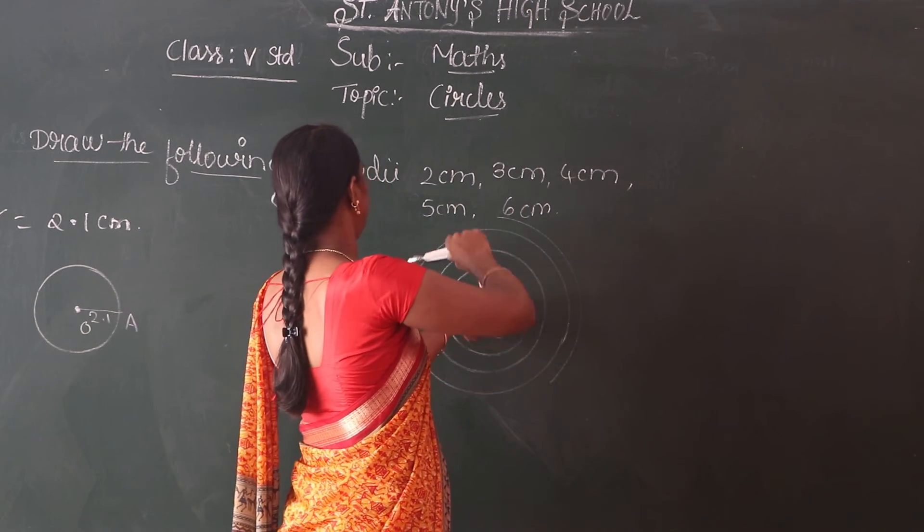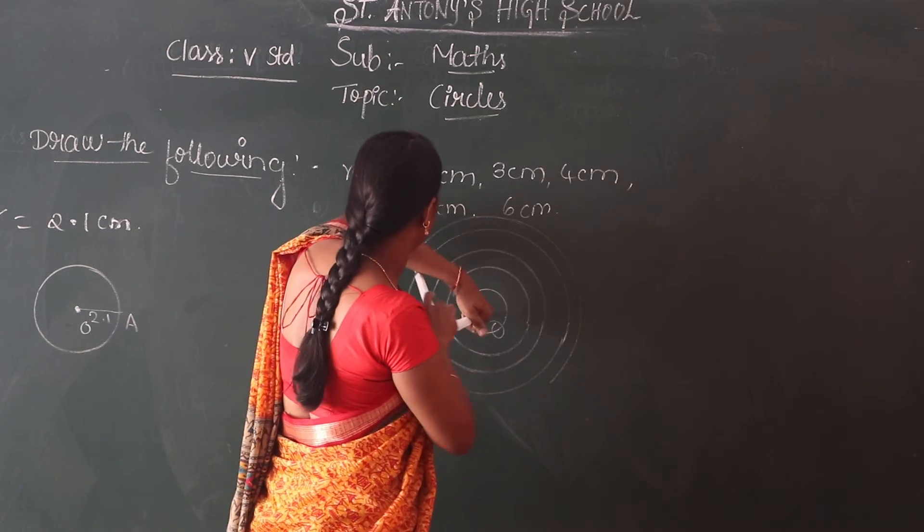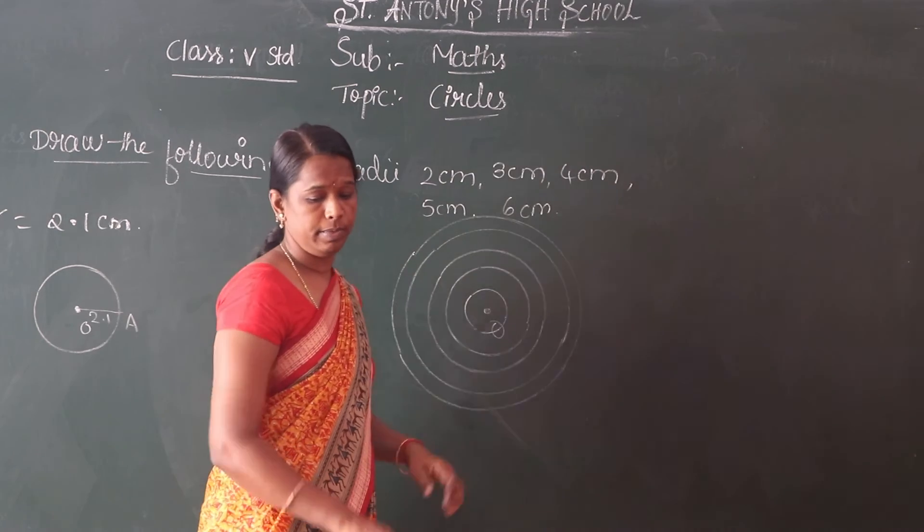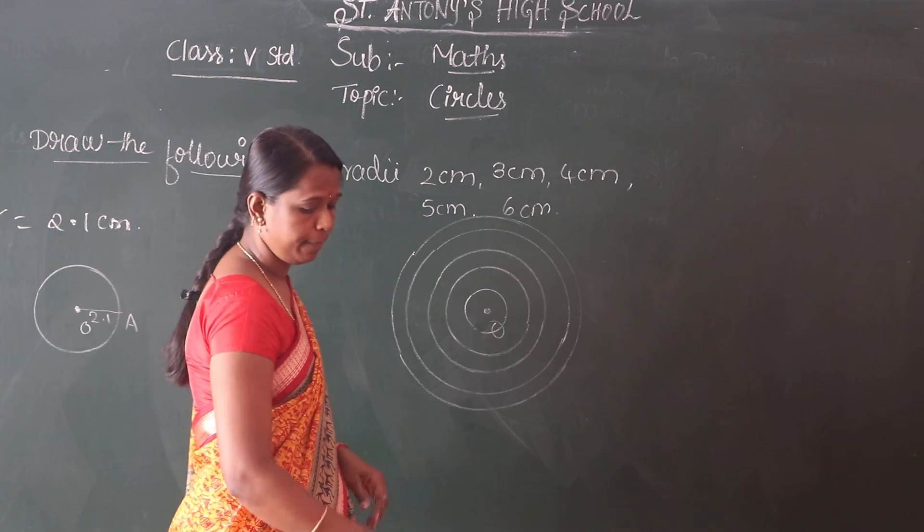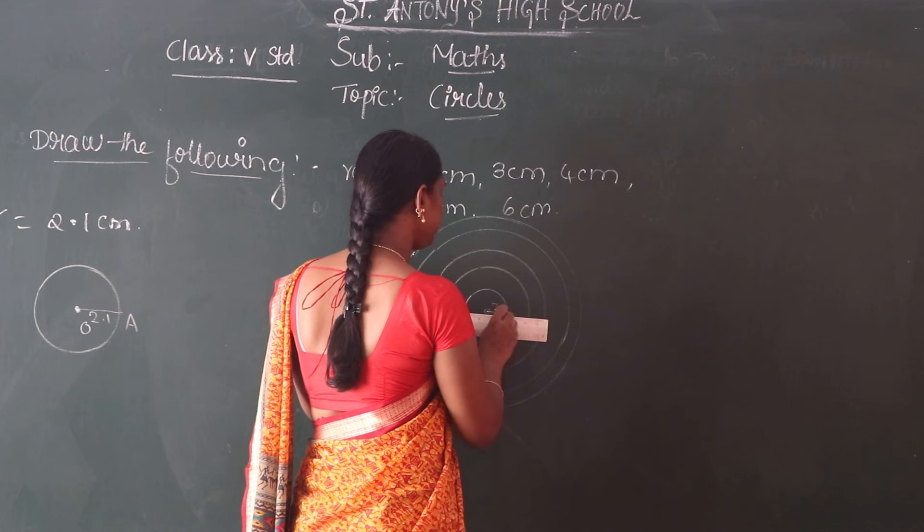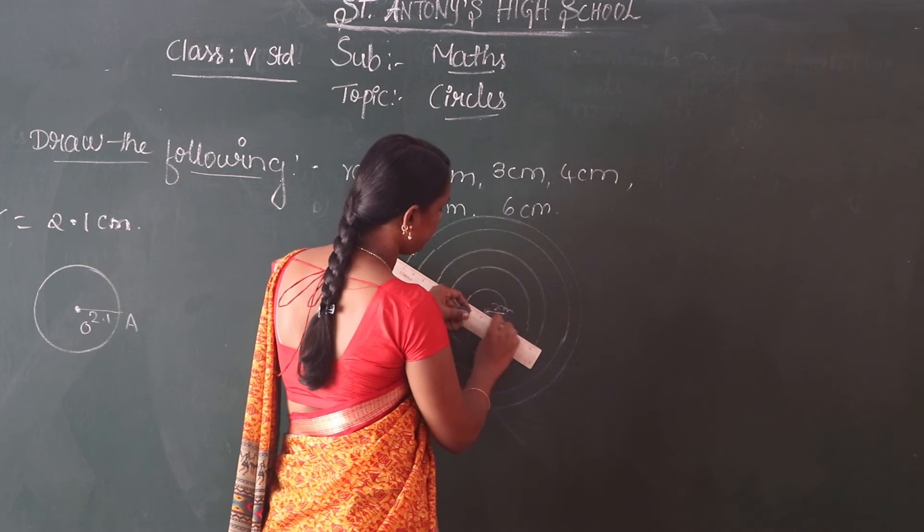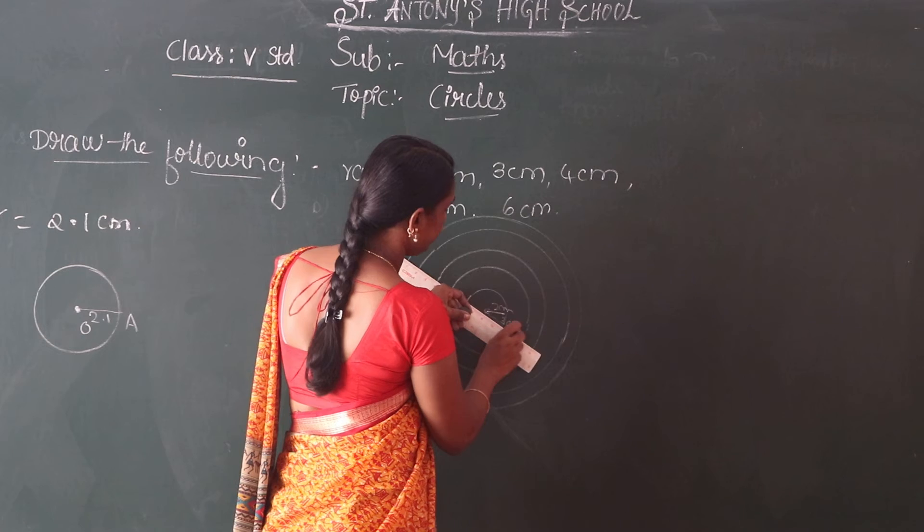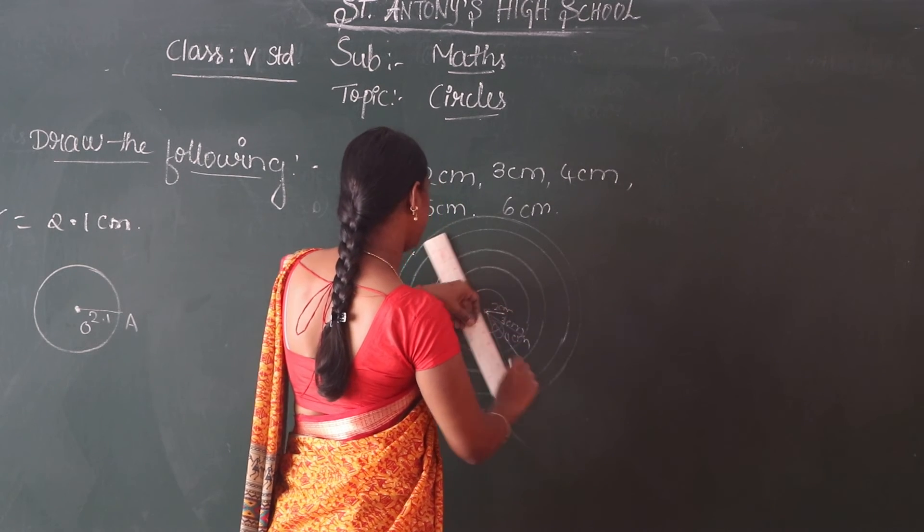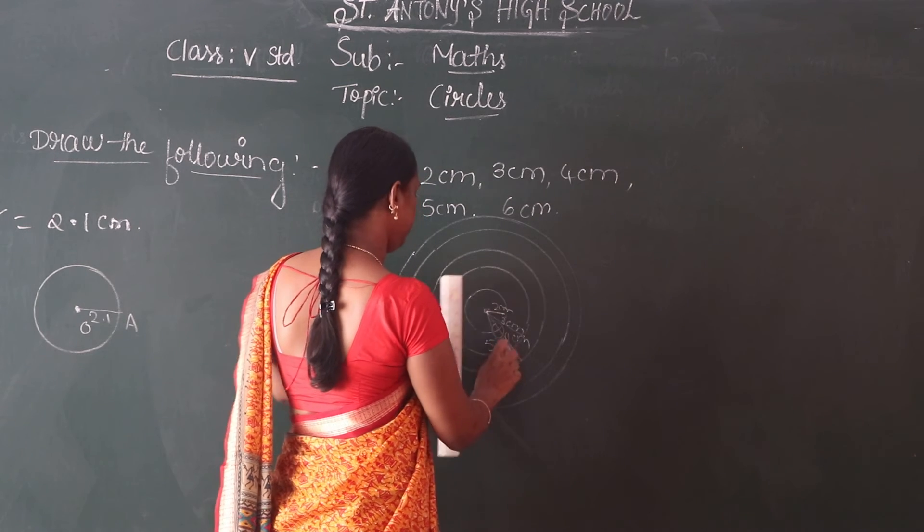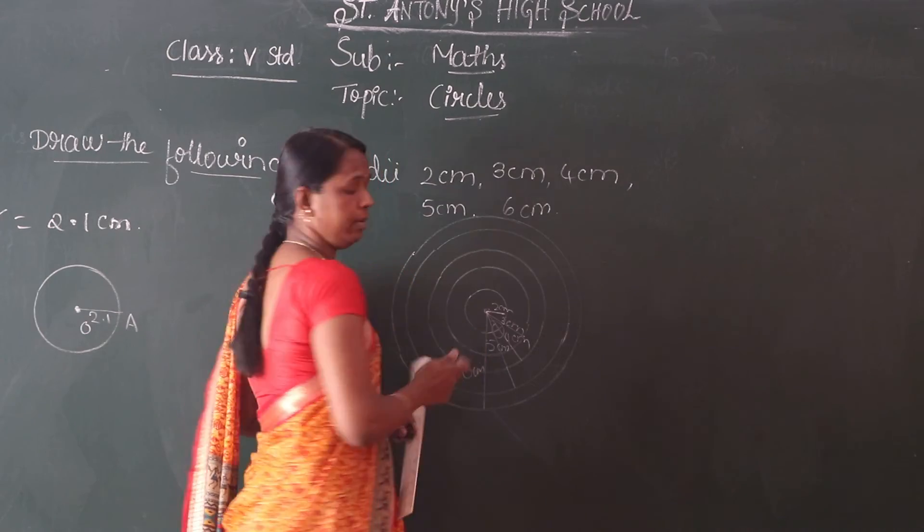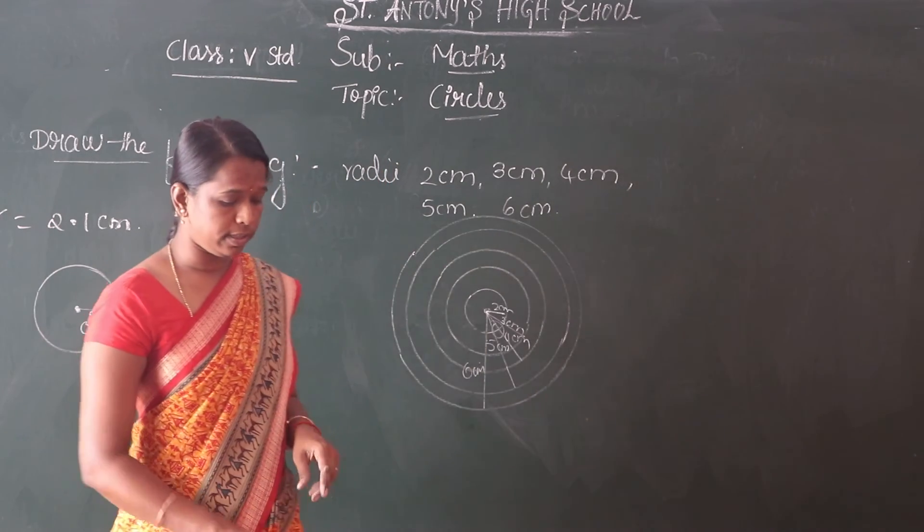Draw all the radii with O as a single center. O is the center of all circles. Third one is 4 cm, next fifth circle is 5 cm, and then sixth circle is 6 cm. Like this, you have to write in your classwork.